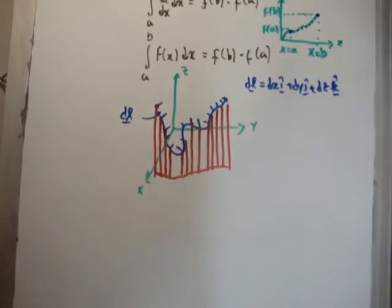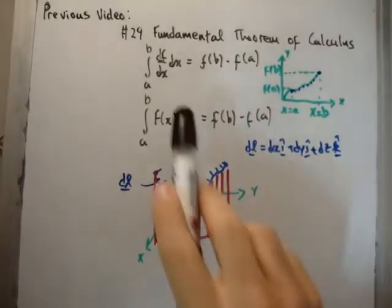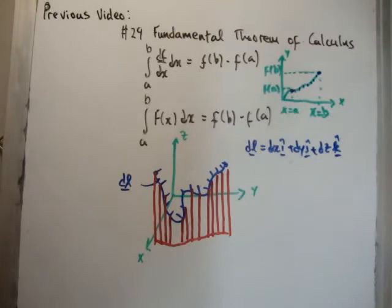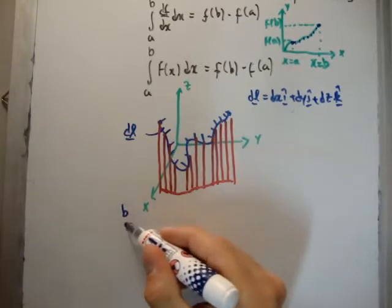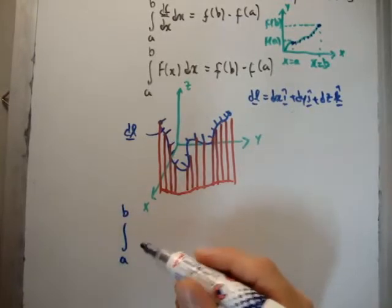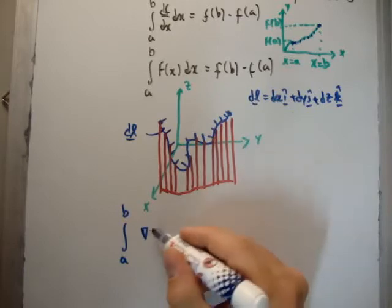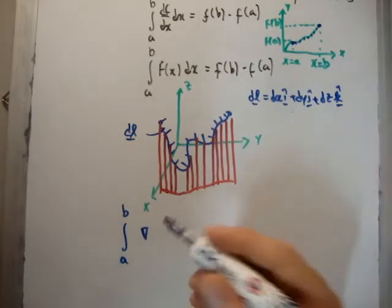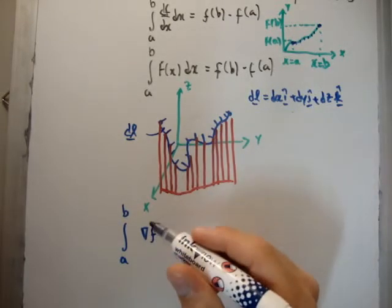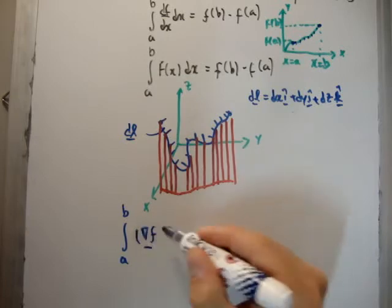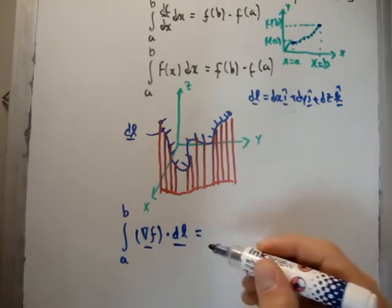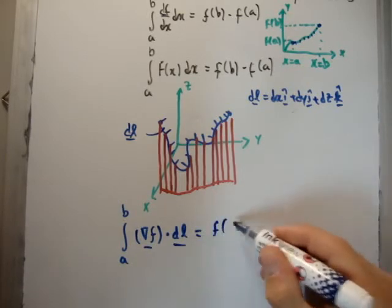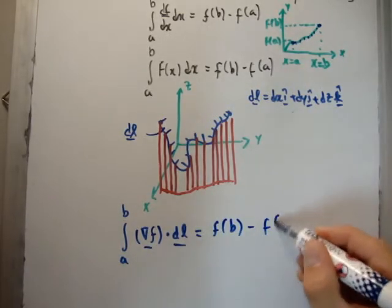So we can see our fundamental theorem up here. So we have df/dx integrated dx. So we know something which is similar to this, but in three dimensions. And of course, it's going to be the gradient. So we integrate from a to b, we take the gradient of our function, let's call the function f. So we take the gradient of our function, we integrate dot dl, because that's how you do a line integral, and that's the same as f at b minus f at a.